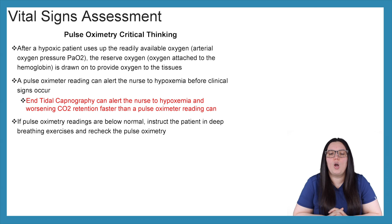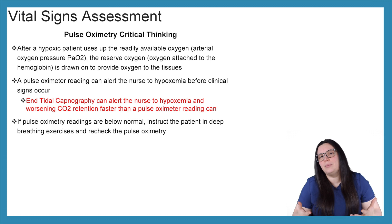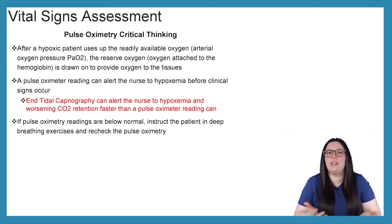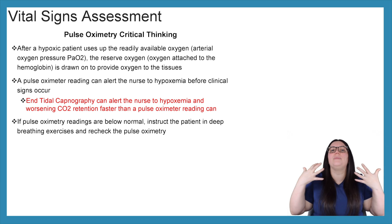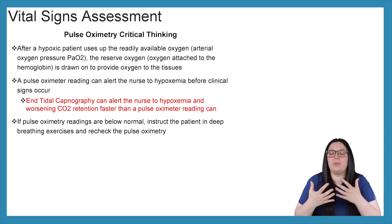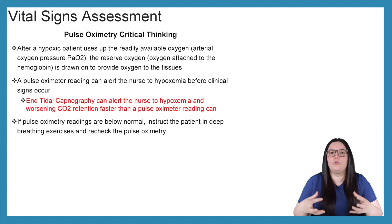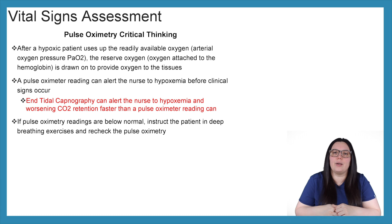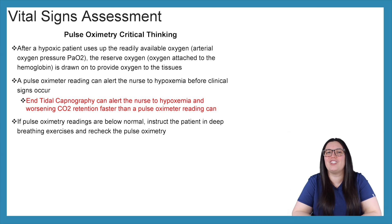If pulse oximetry readings are below normal, instruct the patient to take some deep breathing exercises and recheck their pulse oximetry. Sometimes you might want to use a tool called an incentive spirometry, which helps open up the patient's lungs. Depending on whether there's pain, the patient might not breathe as well, so incentive spirometry opens up those alveoli and gets oxygen into the system. That's your first intervention. If that doesn't work, then absolutely apply supplemental oxygen to your patient.